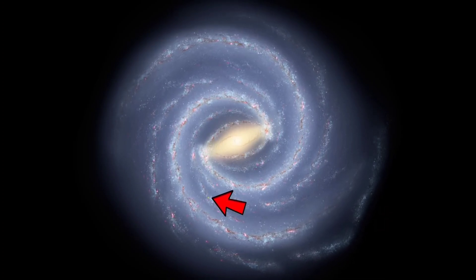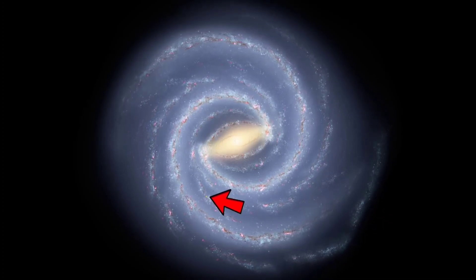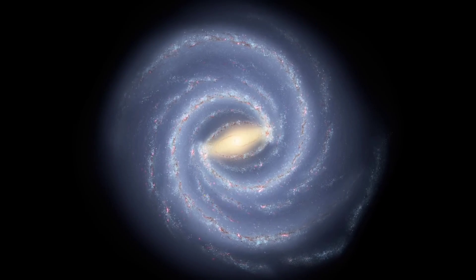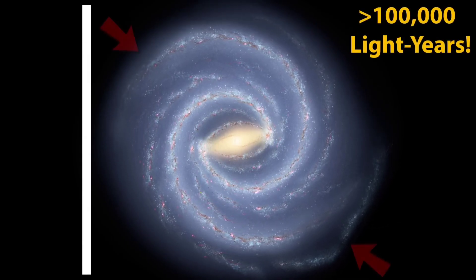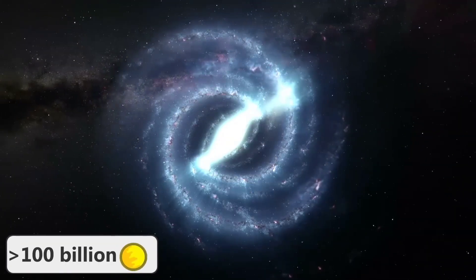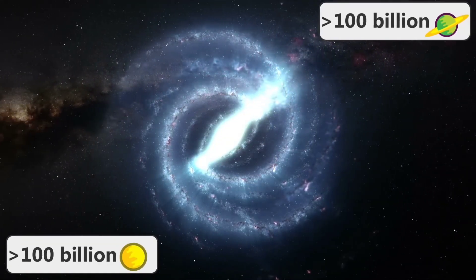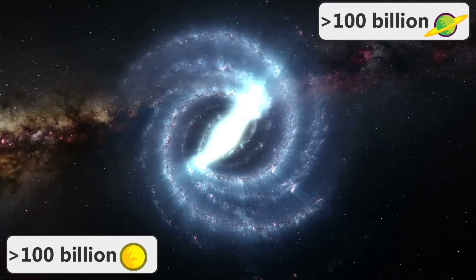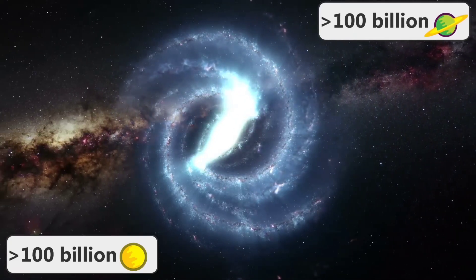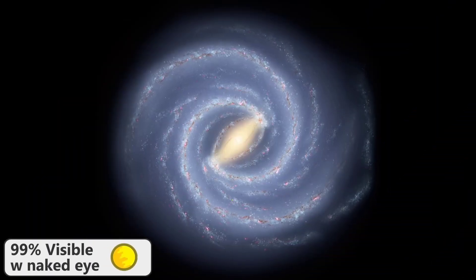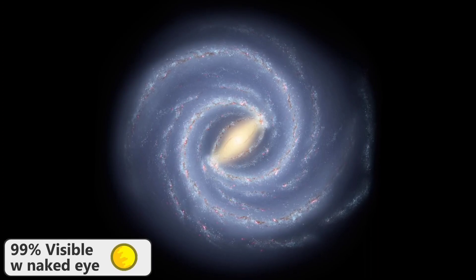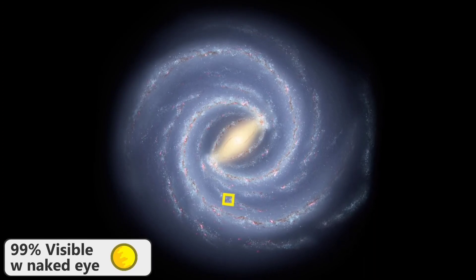But the entire galaxy spans over 100,000 light years from end to end. There are over 100 billion stars and over 100 billion planets inside of our galaxy. But you have never seen the full glory of the galaxy at night because 99% of the stars you can see with the naked eye are limited to the small tiny region right here. But even this massive galaxy is nothing compared to the rest of what's out there.